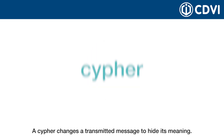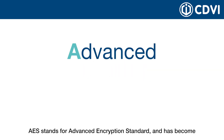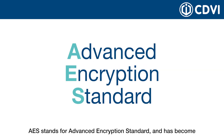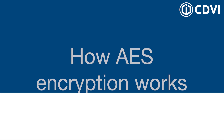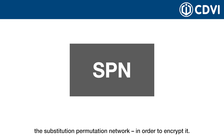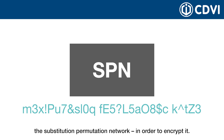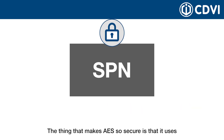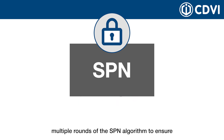A cipher changes a transmitted message to hide its meaning. AES stands for Advanced Encryption Standard and has become a widely used industry standard for encrypting data. Data is entered into an advanced algorithm called the SPN, a Substitution Permutation Network, in order to encrypt it. The thing that makes AES so secure is that it uses multiple rounds of the SPN algorithm to ensure that data is robustly concealed.